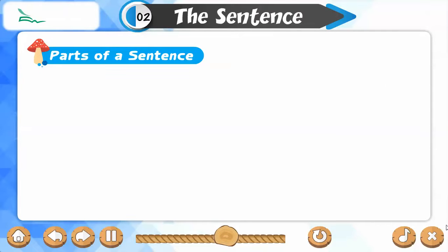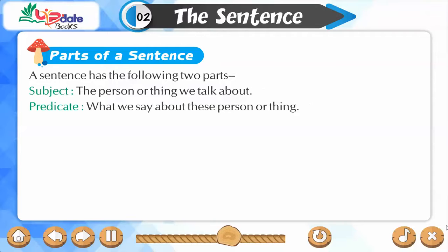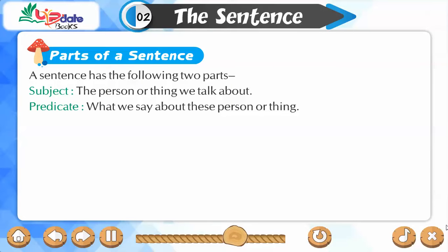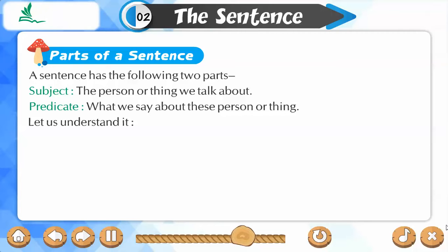Parts of a sentence. A sentence has the following two parts. Subject: the person or thing we talk about. Predicate: what we say about that person or thing. Let us understand it.